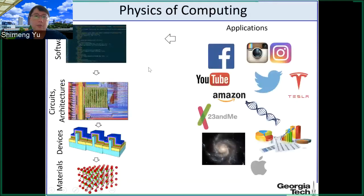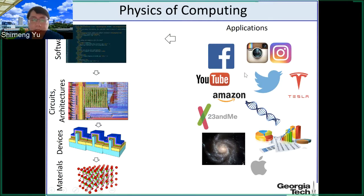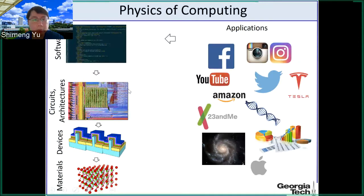Here is the scope of the basics of computing. If you look at the whole stack of the computer system, we are running applications on software. Those apps are written in a software language, compiled into assembly language, and then run on hardware platforms. On the hardware side, at the top level you have architectures — for example, the microprocessor architecture and the well-known von Neumann architecture — where you have the processor and memory: the processor to compute logic, and the memory to store data.